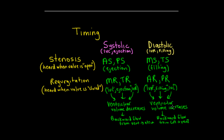To summarize: for stenosis murmurs, you hear the murmur when the valve is open — ejection and filling are the only two phases with an open valve. For regurgitation murmurs, you hear the murmur when the valve is supposed to be closed — mitral and tricuspid during systole, aortic and pulmonic during diastole. The key insight is that we lose our isovolumetric phases in regurgitation because there is always an incompetent valve allowing backward flow, dictated by pressure differences. That concludes this lecture on timing of heart murmurs caused by valvular lesions.